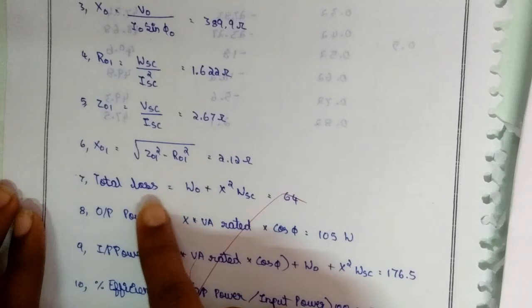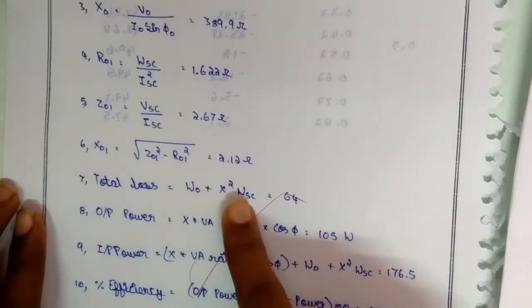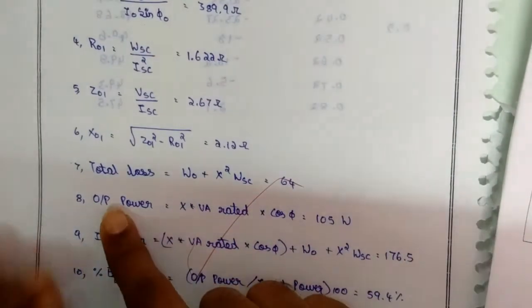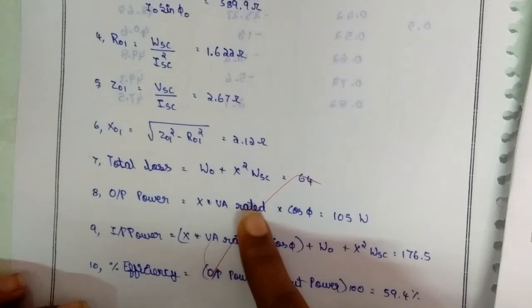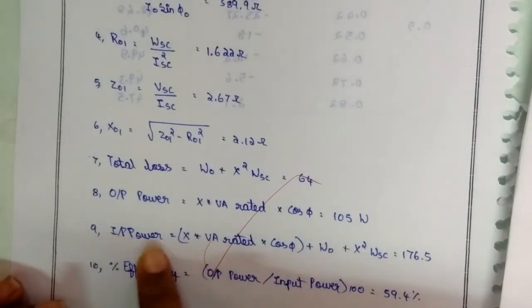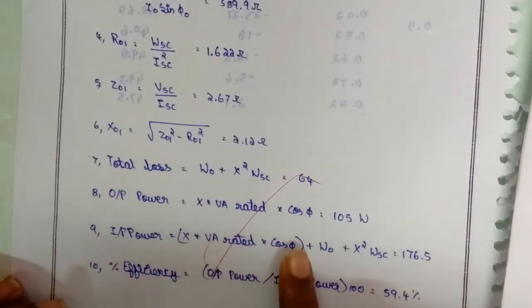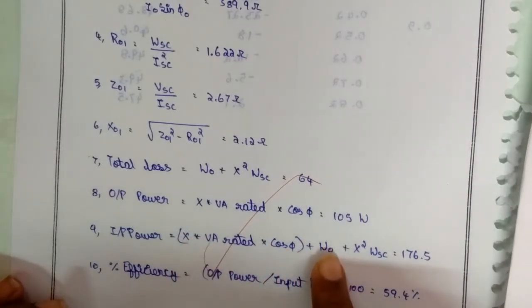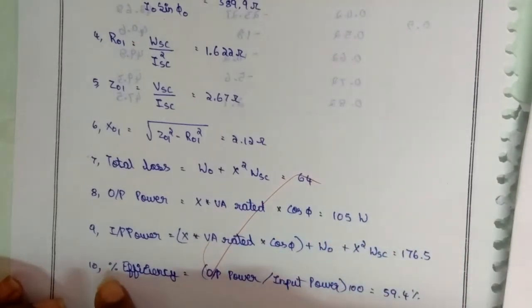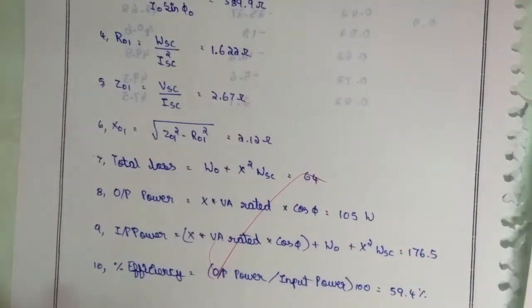And X₀₁ is equal to root of Z₀₁ square minus R₀₁ square. And finally, the total loss will be equal to W₀ plus X square WSC. For output power, the formula will be X into VA rated into cos φ. For percentage efficiency, the formula will be output power by input power into 100.